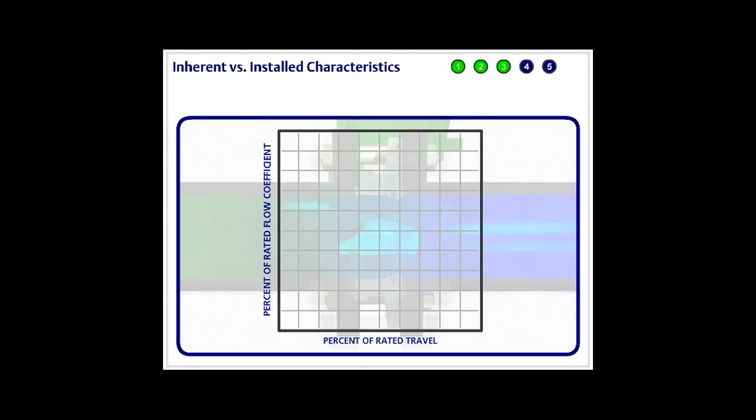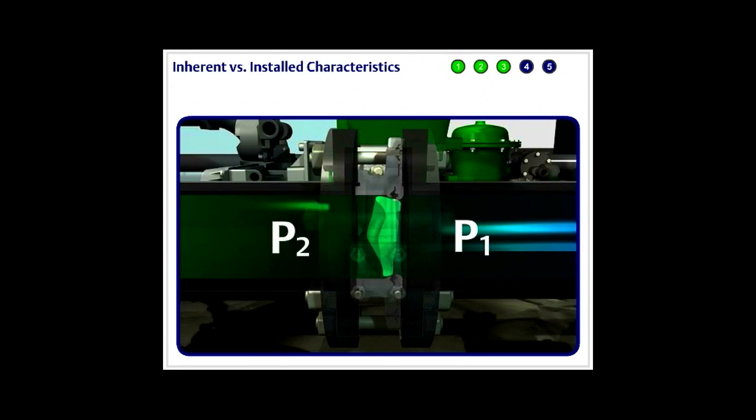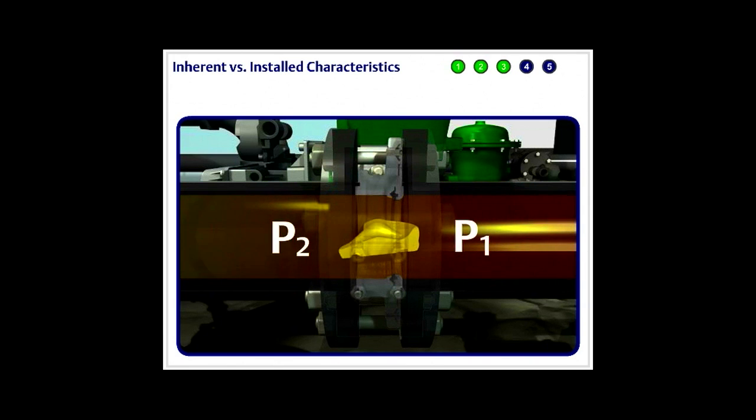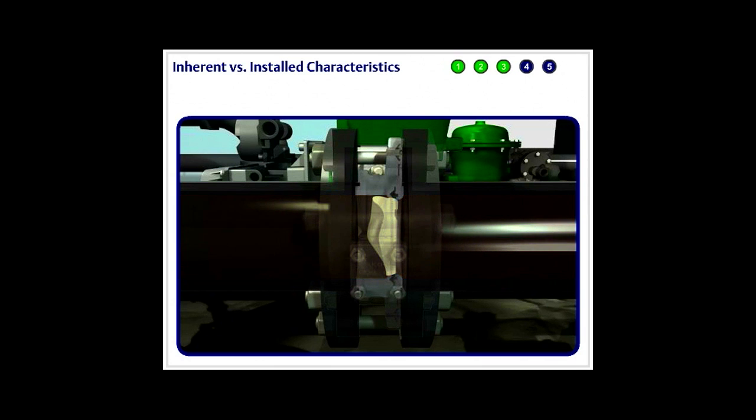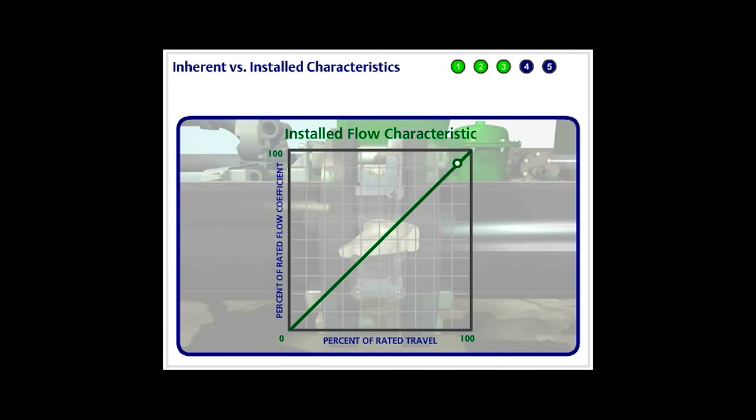While the inherent flow characteristic is important for sales catalog purposes, it is the installed flow characteristic that is important to control of the process. The installed flow characteristic determines to a great degree just how well the valve will perform against changes in pressure and flow. It is important to note that the control disc's inherent equal percentage flow characteristic translates into an installed linear flow characteristic.